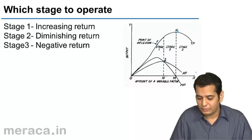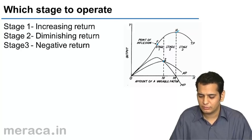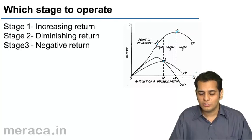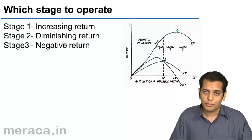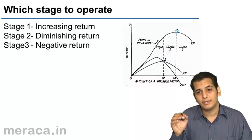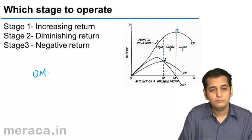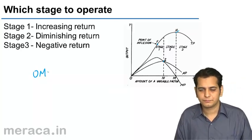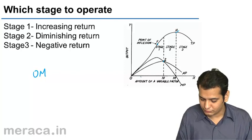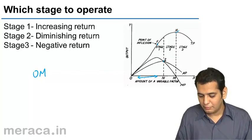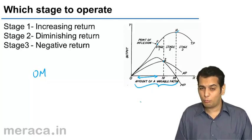Others say he should be producing more than OM number of units, that is, in the third stage. But it is important to understand that the producer would always prefer to be in stage 2 — at the end of stage 2 — wherein he produces OM number of units. He can easily produce OM number of units, but he prefers to produce OM number of units. Now why is it so?